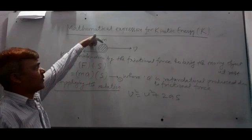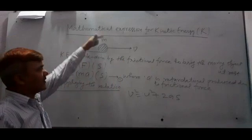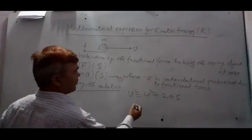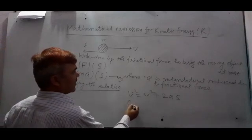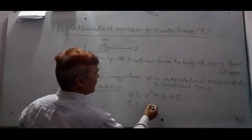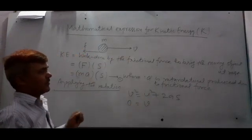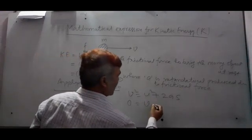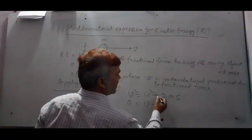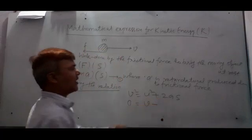Since the moving body has been brought to rest due to friction, the final velocity will be zero and its initial velocity will be V. And since there is a case of retardation here, there will be a negative sign in place of plus.